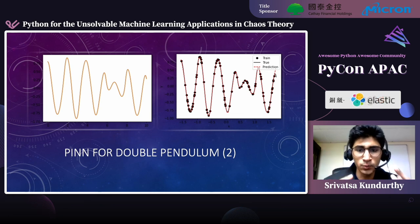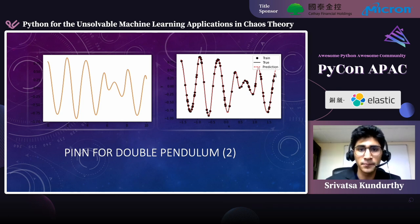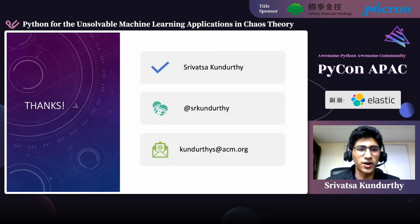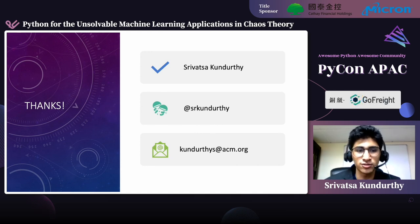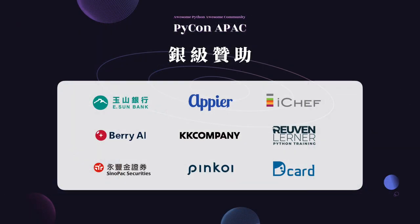We wouldn't have the orange line in a real scenario — it's really just to show the test performance. And there we are: machine learning, chaotic physics, and how Python is bridging the two to solve the unsolvable. Thank you so much. Here's my contact information — do reach out with any questions. Take care.